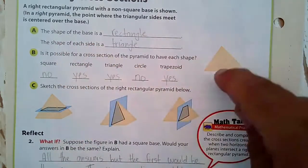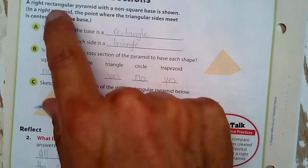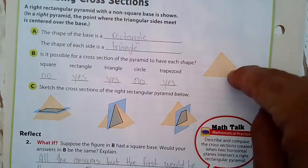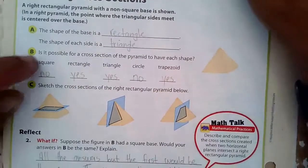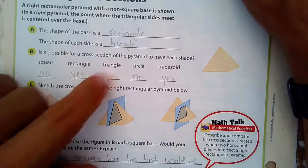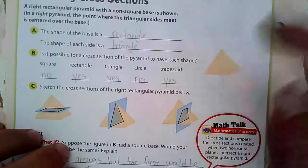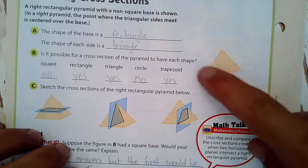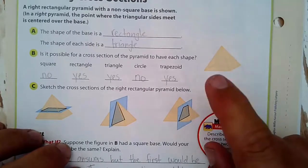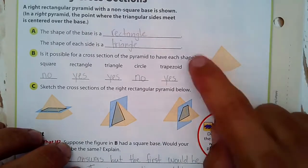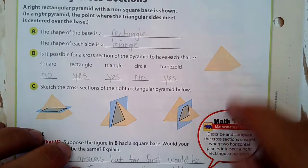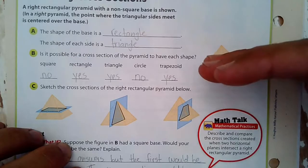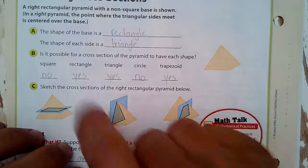The shape of the base is a rectangle. You were told here it's non-square, so it's rectangular. The shape of each side is a triangle. So is it possible for a cross-section, imagine slices going through here. Could you get a square somehow slicing this? Well, no. If that bottom was a square, then you could slice it horizontally and you could get a square.